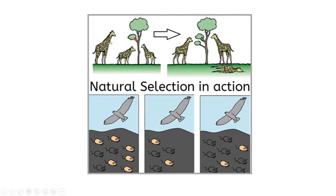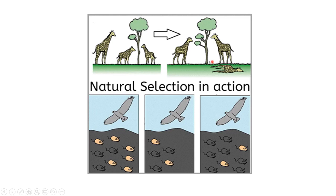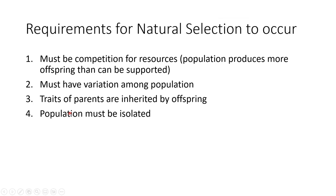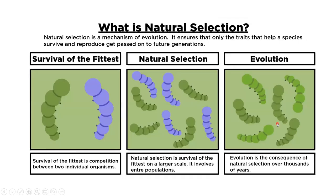If neck length couldn't be passed on genetically, it wouldn't show up in natural selection. Finally, the population must be isolated — no outside influence affecting who reproduces with whom. Also, reproduction must be random. If we were dictating which organisms mate and reproduce, that wouldn't be natural selection because we'd be directing the outcome.